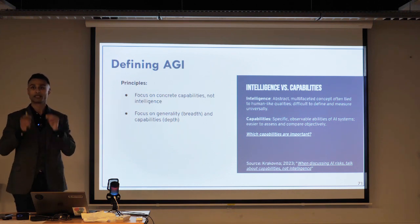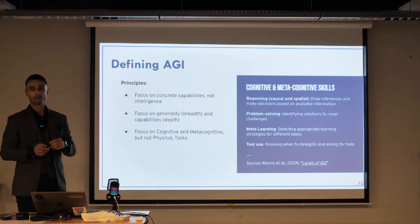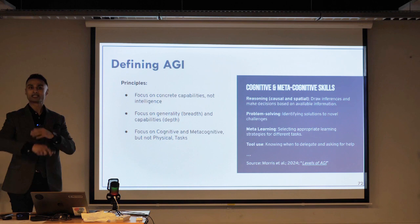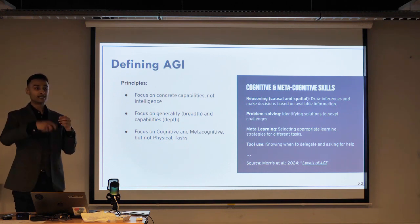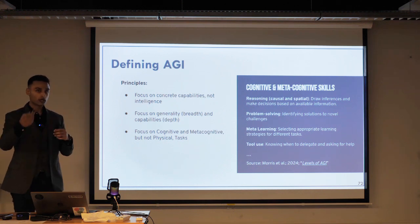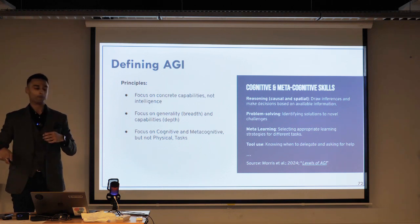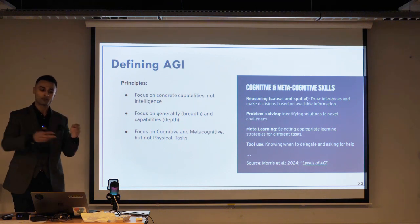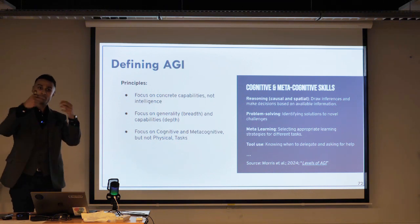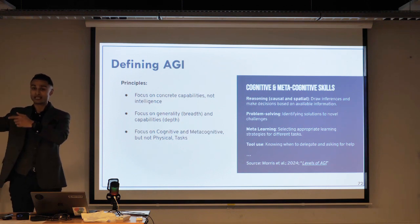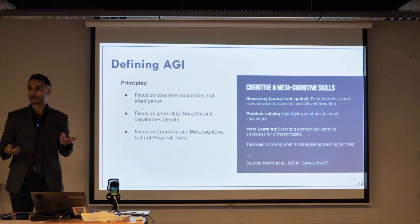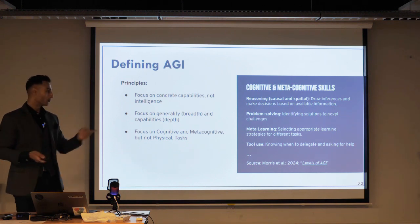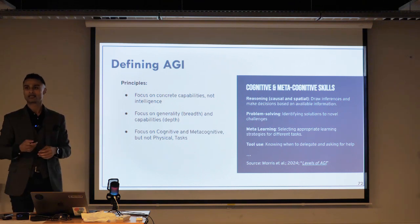But which capabilities are specifically important? The ones we care about are cognitive and metacognitive capabilities instead of things like embodied capabilities that require locomotion in the real world. We care about things like reasoning — causal reasoning, spatial reasoning. We care about problem solving: can you identify problems and solutions on your own? Can you learn and select new learning strategies for different types of tasks? And another thing is tool use. We don't really care if the entire general intelligence system is capable of executing every single task. The important thing is if it can leverage other tools and other narrowly intelligent systems in order to execute its tasks. This is similar to how humans do it — we individually can't do everything, but we can invent and use other things to achieve a wide variety of outcomes.